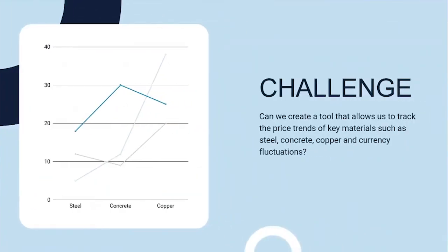The challenge is whether we can create a tool that allows us to track the price trends of key materials. We've taken steel, concrete, copper, and currency fluctuations as this challenge. The idea is to help us predict inflationary measures on project costs more easily and more transparently, and to use machine learning to identify trends.